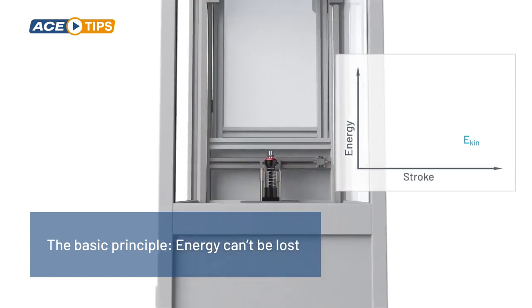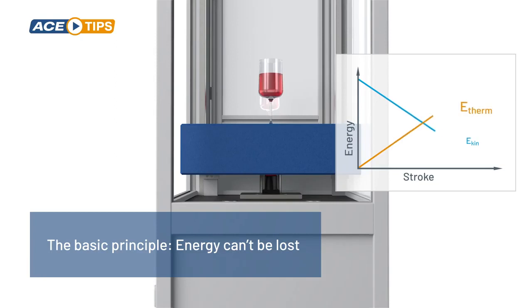An industrial shock absorber converts the kinetic energy of a moving mass via friction into heat energy.